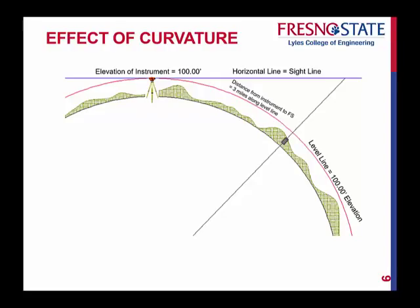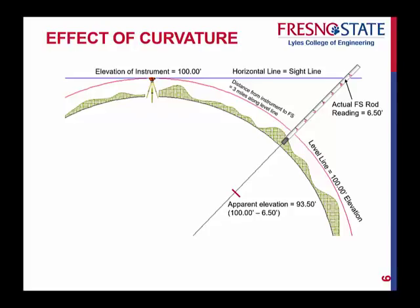From my instrument over to the place I'm trying to level — our foresight — I want to go three miles along that level line. If I stick my level rod out there, and again this is all due to the effects of curvature, we get an actual foresight rod reading of 6.5 feet. Remember a foresight — you subtract that measurement to get down to the elevation of the point. So if our instrument was leveled at 100 feet, I subtract my rod reading, and I end up with an apparent elevation of 93.50 feet, below the point.